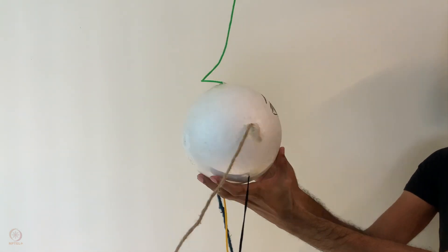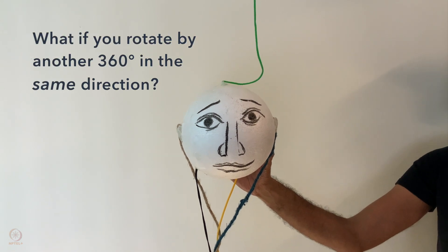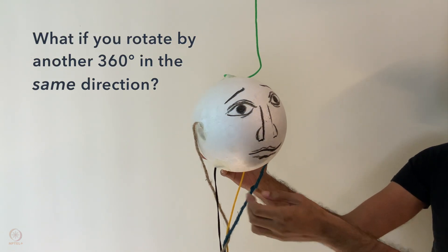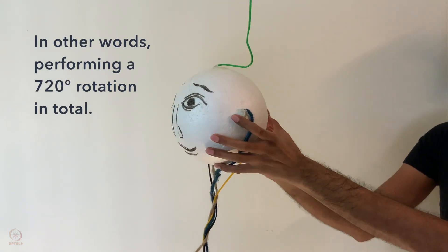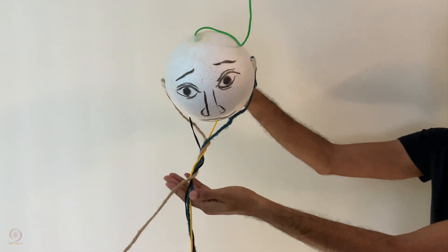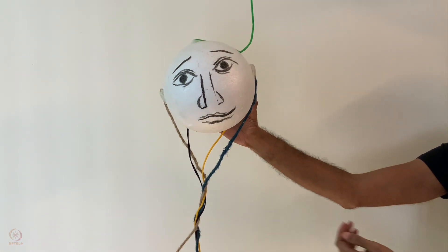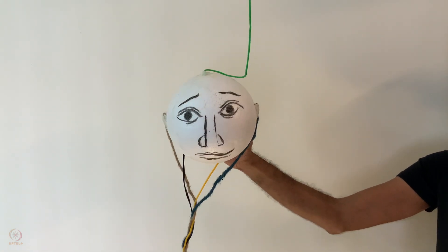After rotating by the initial 360 degrees, what if you rotate your object by another 360 degrees, in the same direction? In other words, performing a 720-degree rotation in total. Common sense tells us that the strings will get even more horribly tangled up. And yet, shockingly, the opposite happens.